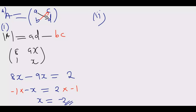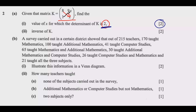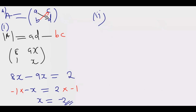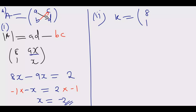Now let us find part A2. Once you find A1 you get those two marks. We are looking for the inverse of K. First, I need to write out matrix K itself by substituting X = negative 2. So K becomes the first column [8, 1] and second column [9×(−2), −2], which gives us [−18, −2]. So K is [8, 1; −18, −2].